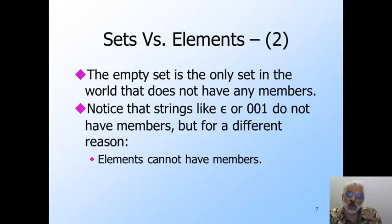And elements do not have members either. For example, epsilon has no members. But the reason epsilon has no members is because it is of a type for which having members makes no sense. We must not confuse the empty string with the empty set. They each have no members, but for very different reasons, and their types are not the same.